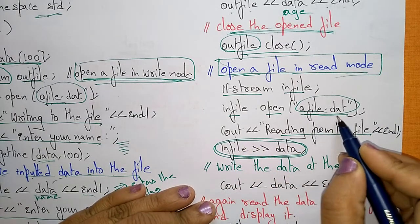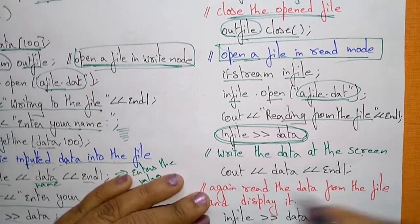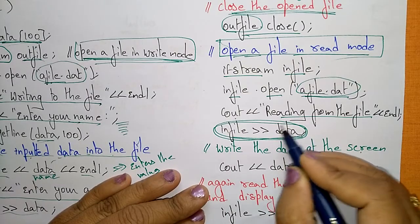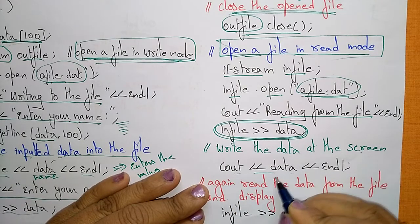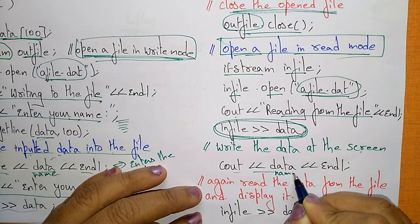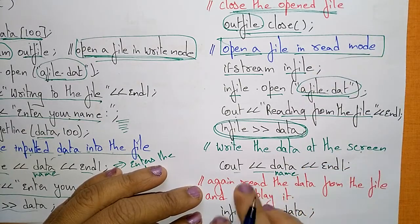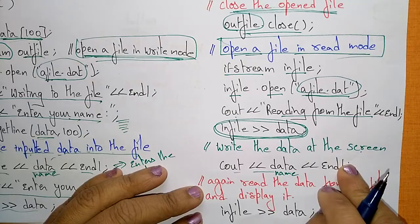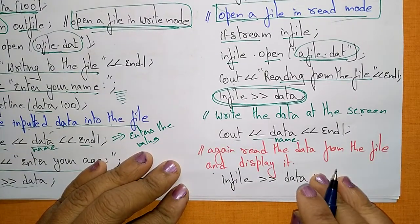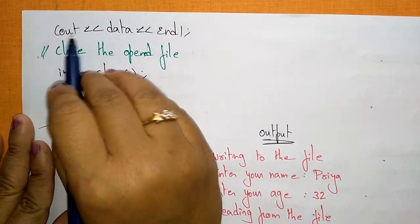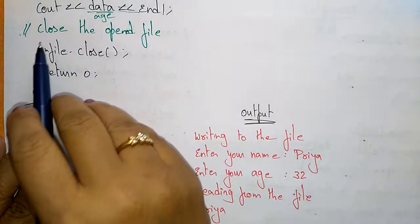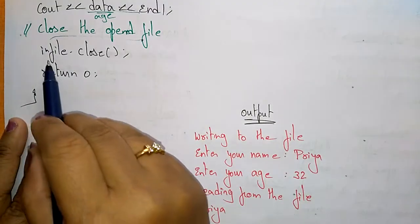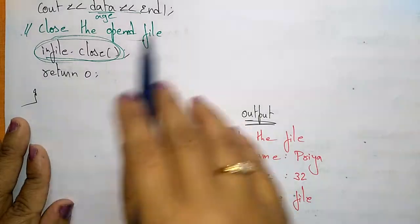Now I read from the file: infile >> data. This reads the data present in 'a_file.dat'. Whatever data I read, I want to display it on the screen: cout << data << endl. This prints the name. Then again: infile >> data and cout << data << endl — this displays the age. After reading and displaying, close the open file: infile.close().